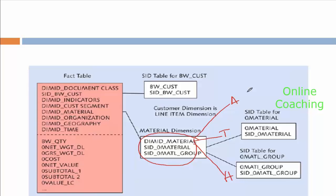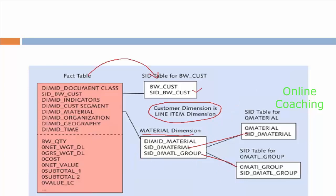Now, if I make one dimension as a line item dimension — for example, I have a customer dimension and I made it as a line item dimension — then what happens? It doesn't create the dimension table. There is no dimension. The fact table is directly connected to the SID table; in between, there is no dimension table. So when you have only one single info object you want to add into a dimension, rather than creating a table, make it as a line item dimension. It will directly connect to your SID table and you can save space for the dimension table.